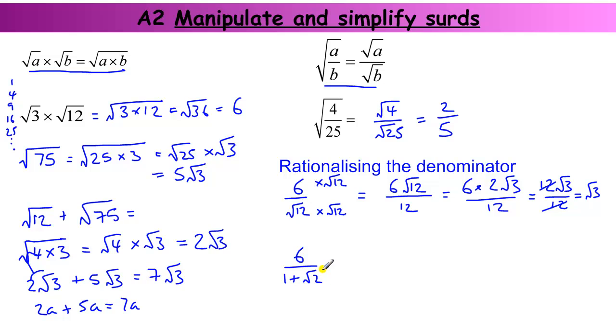So this is one of the uses for the difference of two squares. So what I do is if I times the bottom by one minus root two, whatever this is, if this is a minus, I times it by the plus. If this was a plus, I times it by the minus, like I've done here.